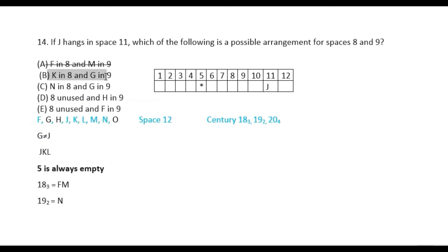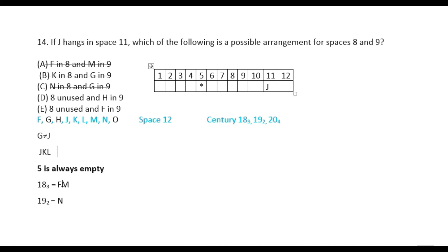Option B is bad. Option C is also bad — in space 9, keeping G and D and E, those two are not in the same group. So option E is also bad because F would be an 18th century painting. So option E is the answer.